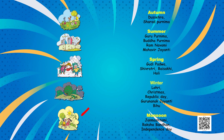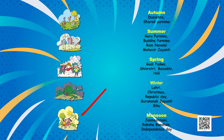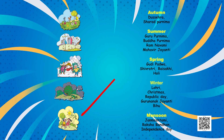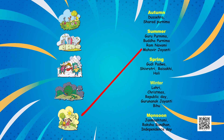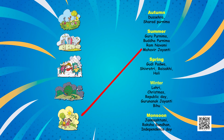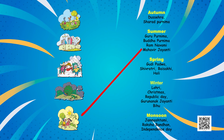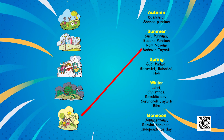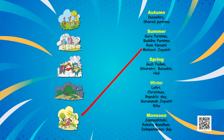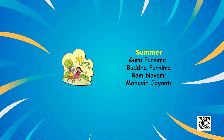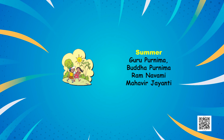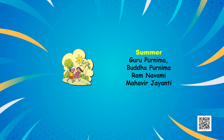Lastly, we see two children walking — one is eating an ice cream, the other is wiping his face with a handkerchief, and the sun is shining upon them. Which season do you think it is? It is the summer! Festivals like Guru Purnima, Buddha Purnima, Ram Navami and Mahavir Jayanti are celebrated in this season.